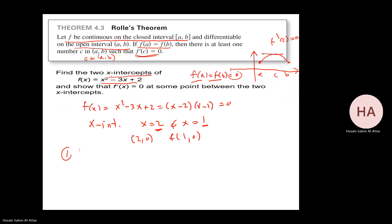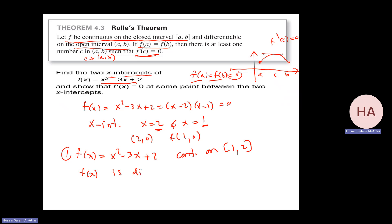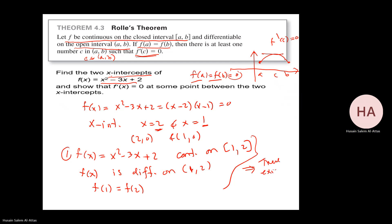The function f(x) is continuous on the closed interval [1, 2] — actually continuous everywhere, but applying the theorem. And f(x) is differentiable on the open interval (1, 2). Also, f(1) equals f(2), both equal to 0. These three conditions imply there exists c in (1, 2) such that f prime at c equals 0.